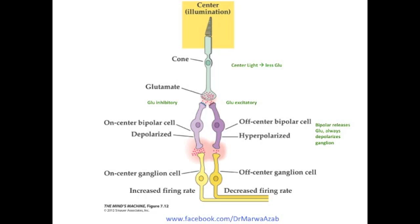Now let's take the other example with the off-center bipolar cell. The off-center bipolar cell is typically excited by glutamate. When the center of a photoreceptor is illuminated by light, this illumination causes hyperpolarization, which means a decrease in the amount of glutamate released — which typically has an excitatory effect on the off-center bipolar cell. This decrease in glutamate release is going to hyperpolarize the off-center bipolar cell, leading to a decrease in glutamate release from the off-center bipolar cell. Less glutamate on the next off-center ganglion cell means the off-center ganglion cell will decrease its firing rate, leading to a reduction in action potentials.